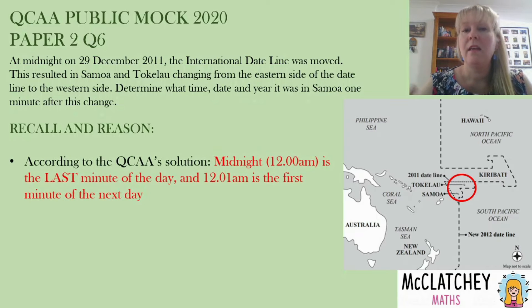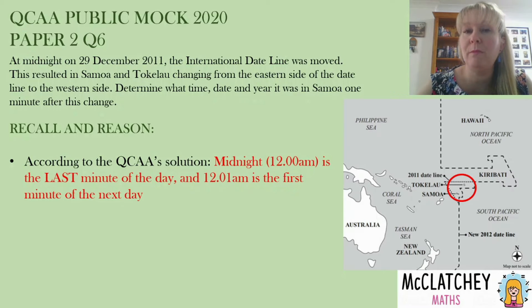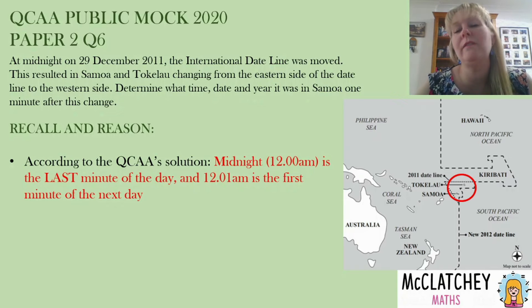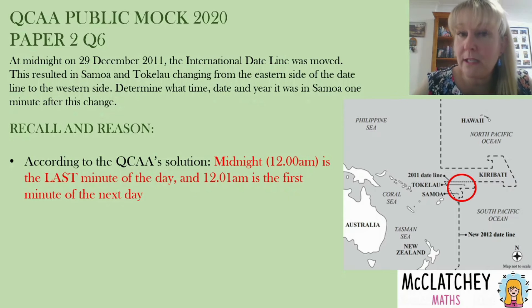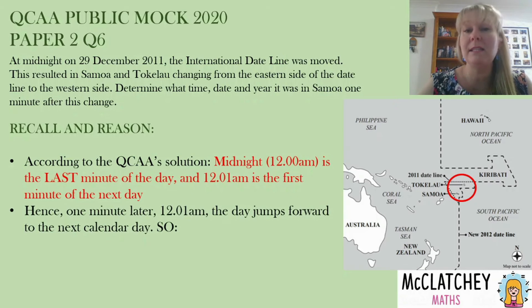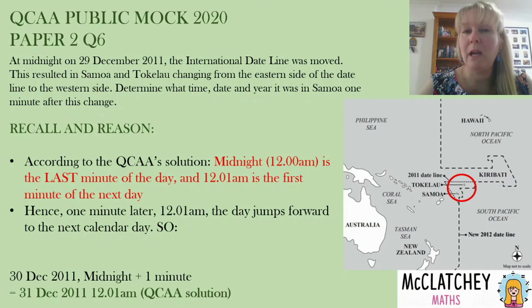Now the next part of the question: midnight, 12am, in the middle of the night, is the last minute of the day according to the QCAA solution. So that means one minute later it's now going to be 12:01am, which is the first minute of the next day — and this is probably the one little nuance people will struggle with. Is midnight the first or last minute of the day? According to QCAA it's the last minute. So one minute later is the start of the next day, meaning the date jumps forward one more calendar day. We're now at 12:01am on the 31st of December.